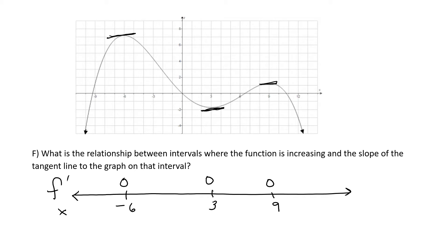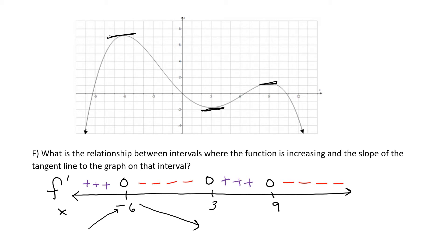Let's match the signs of the derivative. If the graph is rising, it has a positive slope, so the derivative is positive. If the graph is falling, it has a negative slope, so the sign of the derivative is negative. Again, if the graph is rising, the slope of any tangent line in that interval is positive, so the derivative is also positive. And if the graph is falling, any tangent line drawn to that graph has a negative slope, which means the derivative is negative.